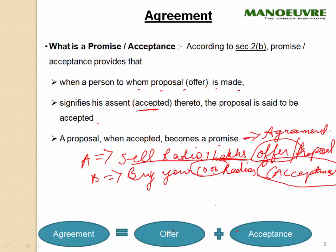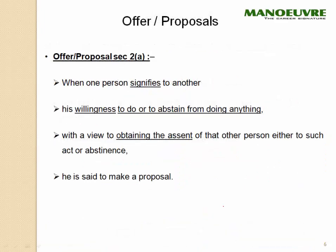Lots of questions are based on these topics — around 4 to 5 marks are expected from the topic of contract. Terms like proposal, offer, consideration, agreement, and contract are very important for your examination. I will discuss the latest papers with you as well, so you will have a better idea of what type of questions are asked in the exams and how to crack them.